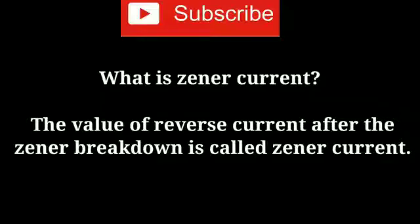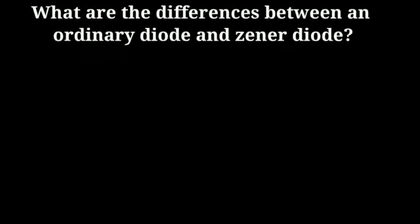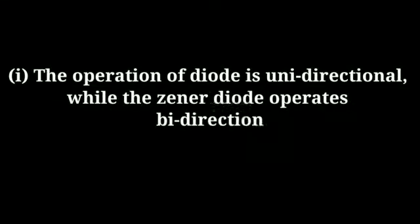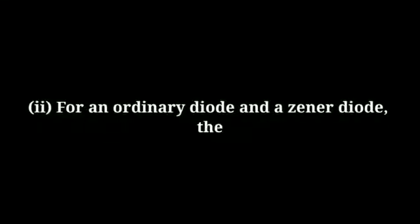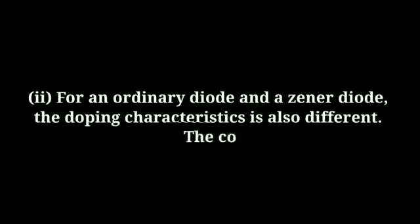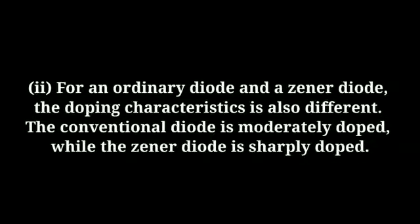What are the differences between an ordinary diode and a zener diode? The operation of a diode is unidirectional, while the zener diode operates bi-directionally in both forward and reverse biased conditions. The doping characteristics are also different: the conventional diode is moderately doped while the zener diode is heavily doped.